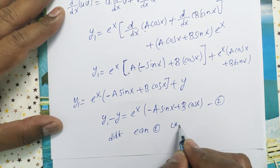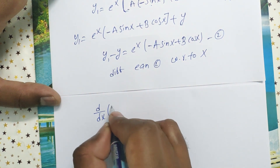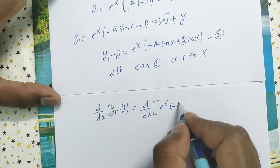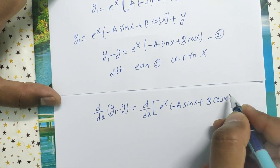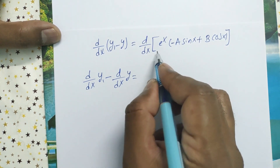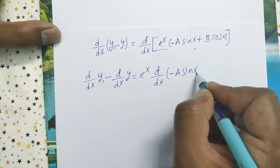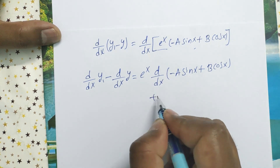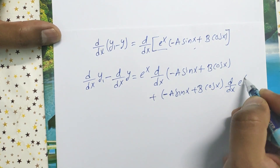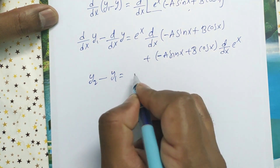Differentiate equation two with respect to x: d/dx(y₁ - y) = d/dx[eˣ(-a sin x + b cos x)]. Applying the product rule again — u is eˣ and v is (-a sin x + b cos x) — we get y₂ - y₁ = eˣ · d/dx(-a sin x + b cos x) + (-a sin x + b cos x) · d/dx(eˣ).